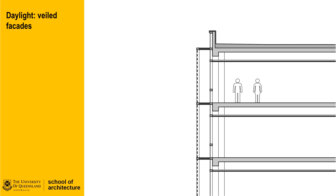Another strategy to reduce direct solar radiation hitting the facade is to use a lightweight outer facade to veil the main facade. The use of perforated metals is popular in this instance as it can be quite translucent looking out, but also quite opaque when looking in. The effect can be quite stark if a veil is used to cover an entire building; however, if broken up with a pattern and with specific form, it can help buffer the climate to the main facade.